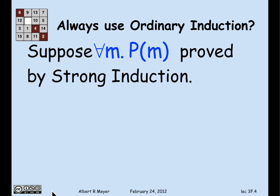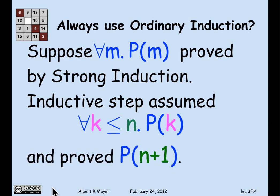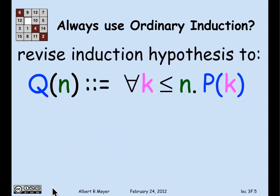It's the same base case whether you're using ordinary or strong. But in strong induction, you would do an inductive step where you assumed not just P of n, but P of k for all k less than or equal to n. Using all those hypotheses about P of k, you proved P of n plus 1. How do you turn it into an ordinary induction? Just let Q of n be the assumption that for all k less than or equal to n, P of k.